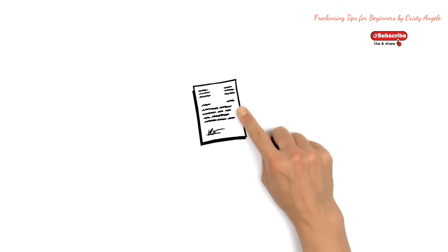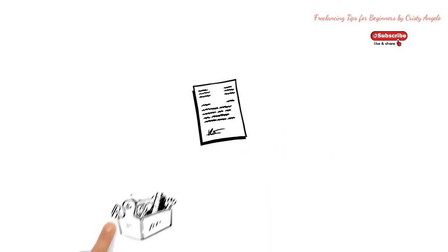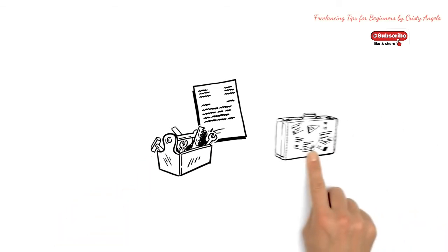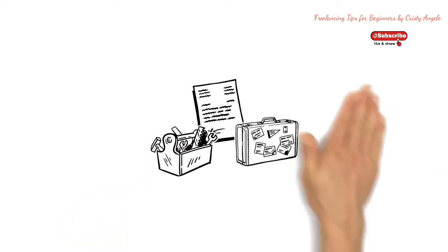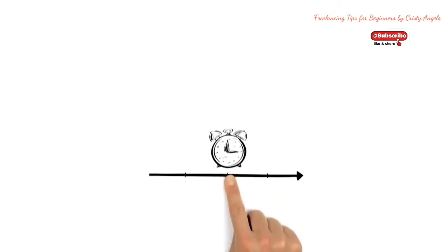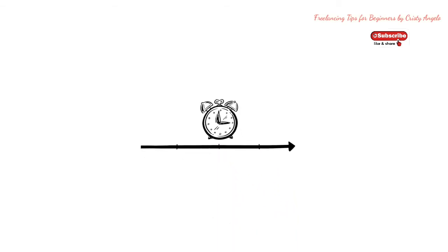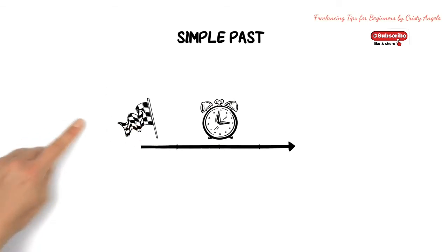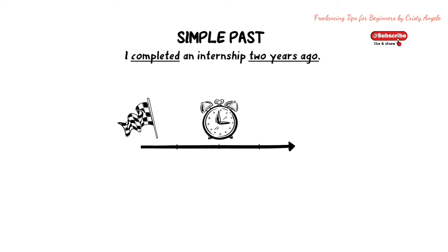The content should provide two or three solid examples of your skills and experience. But watch your English tenses. Use simple past for events finished in the past, saying when exactly. For example, I completed an internship two years ago.